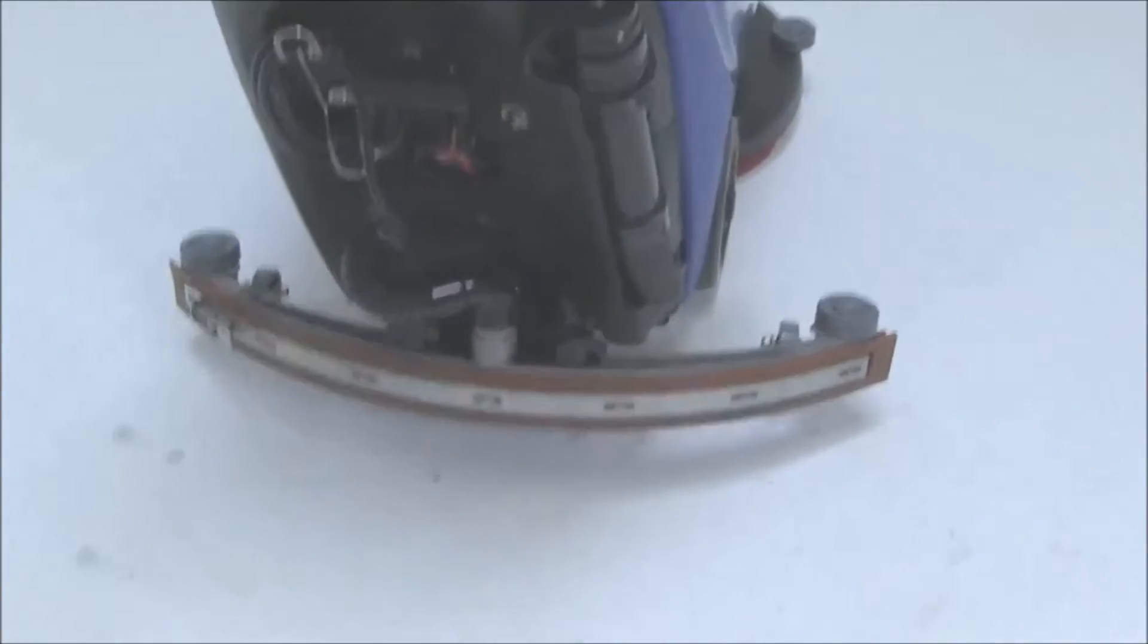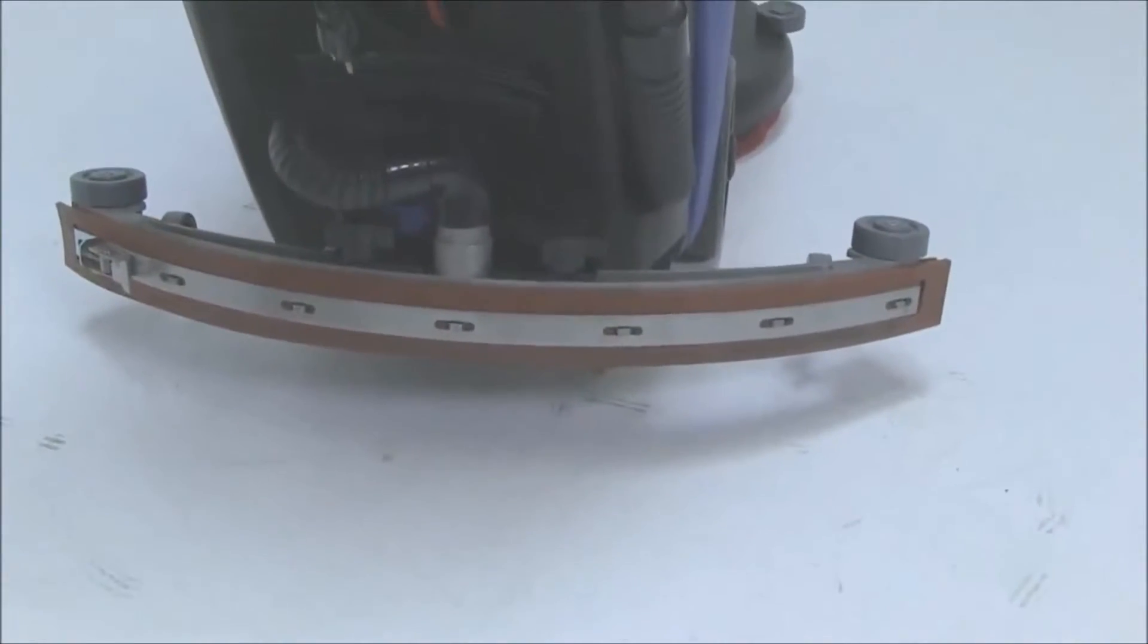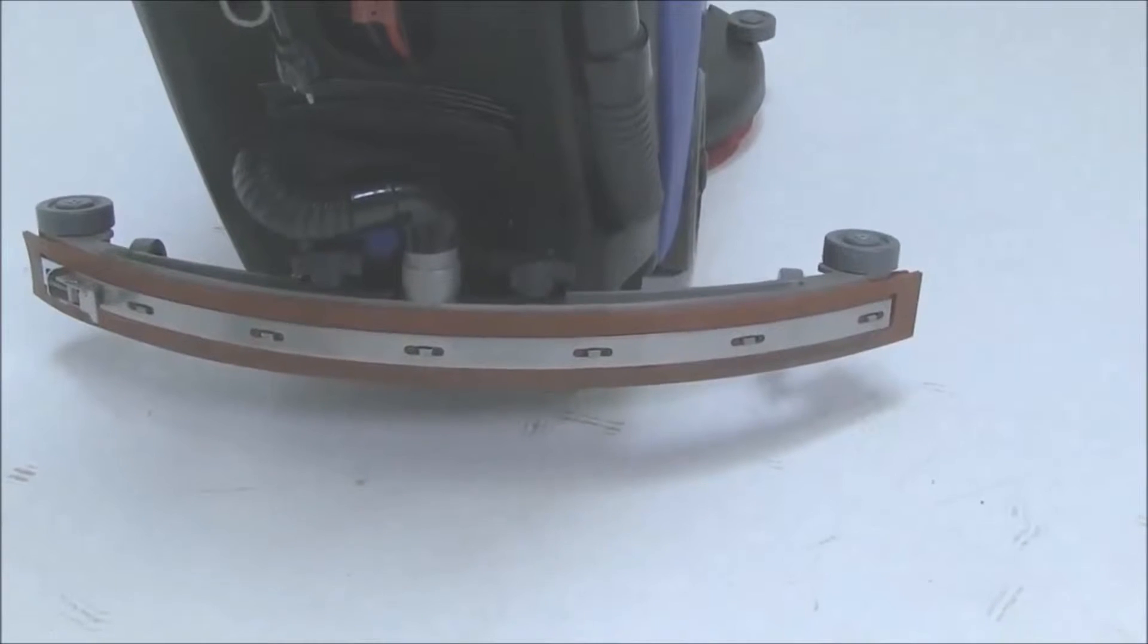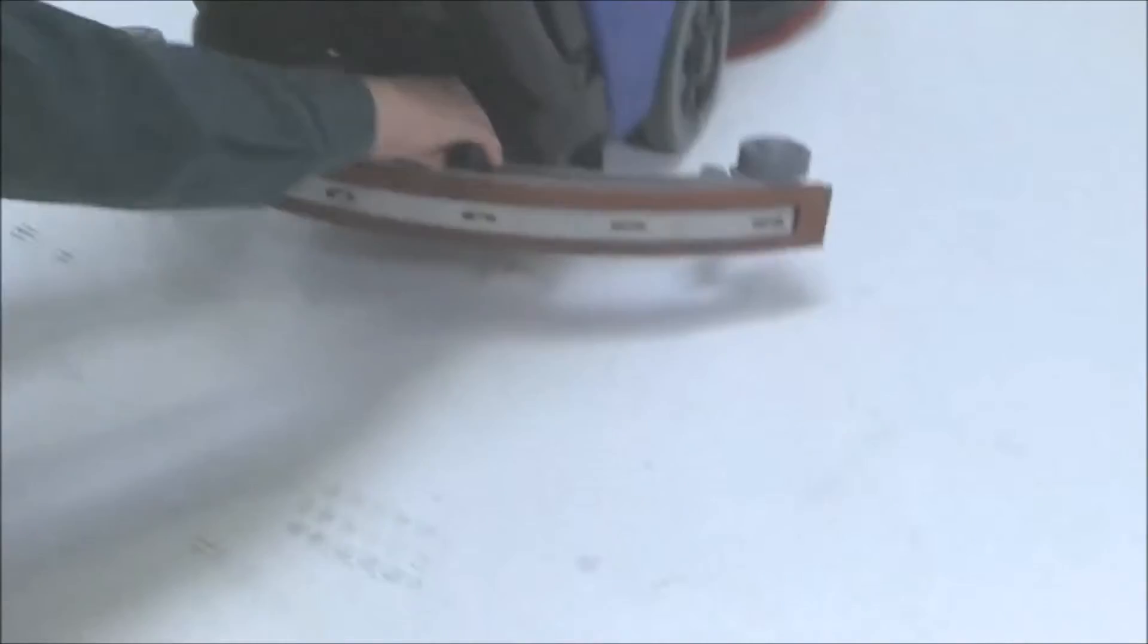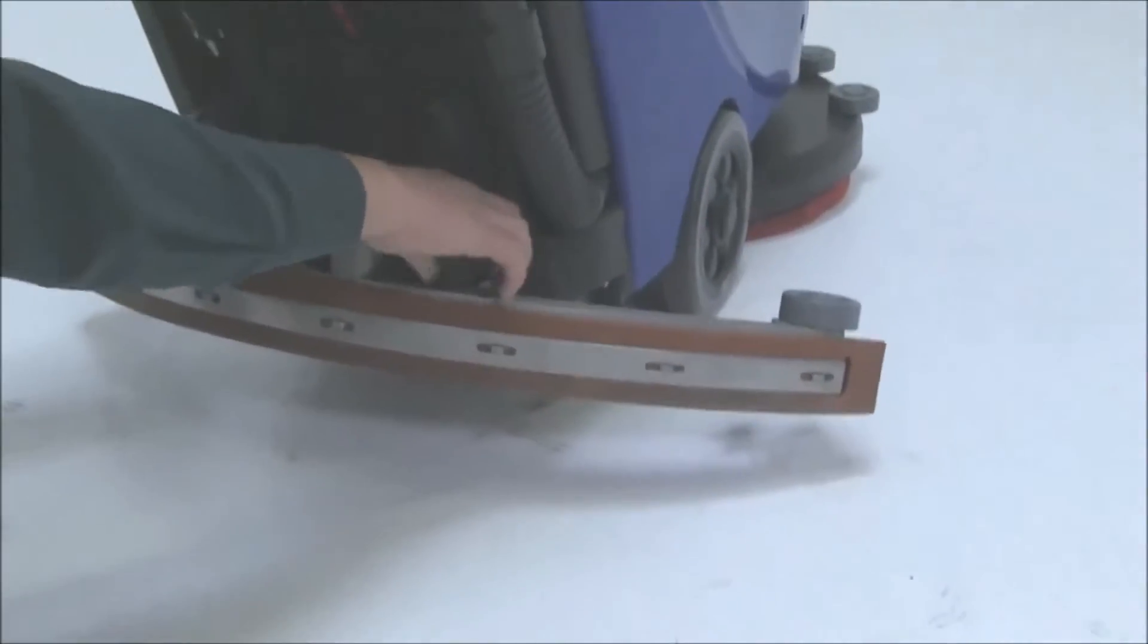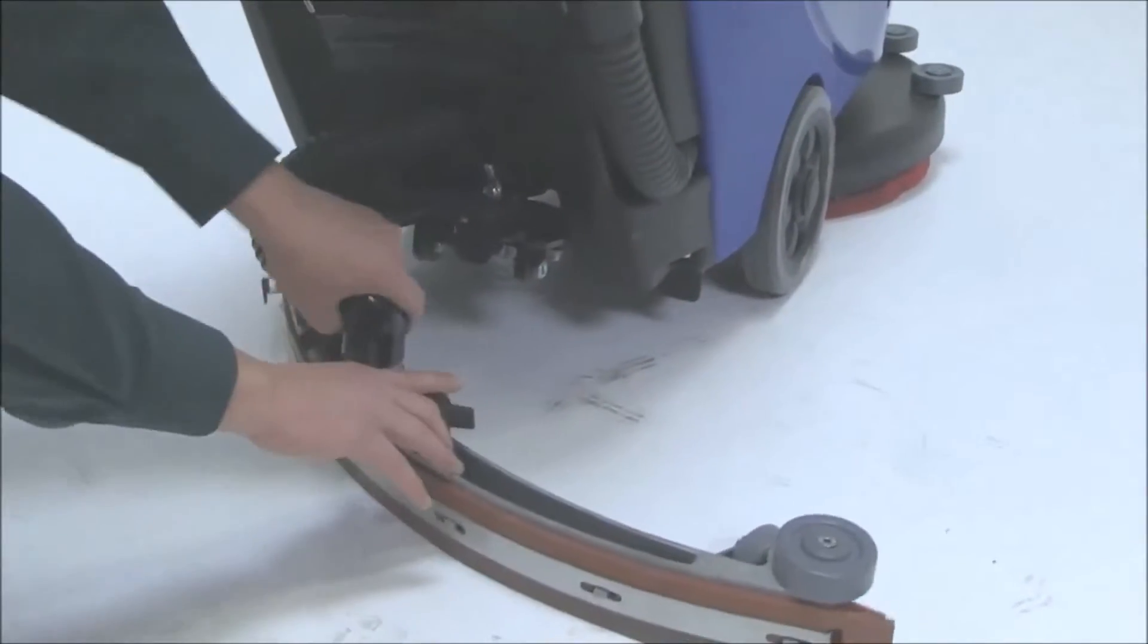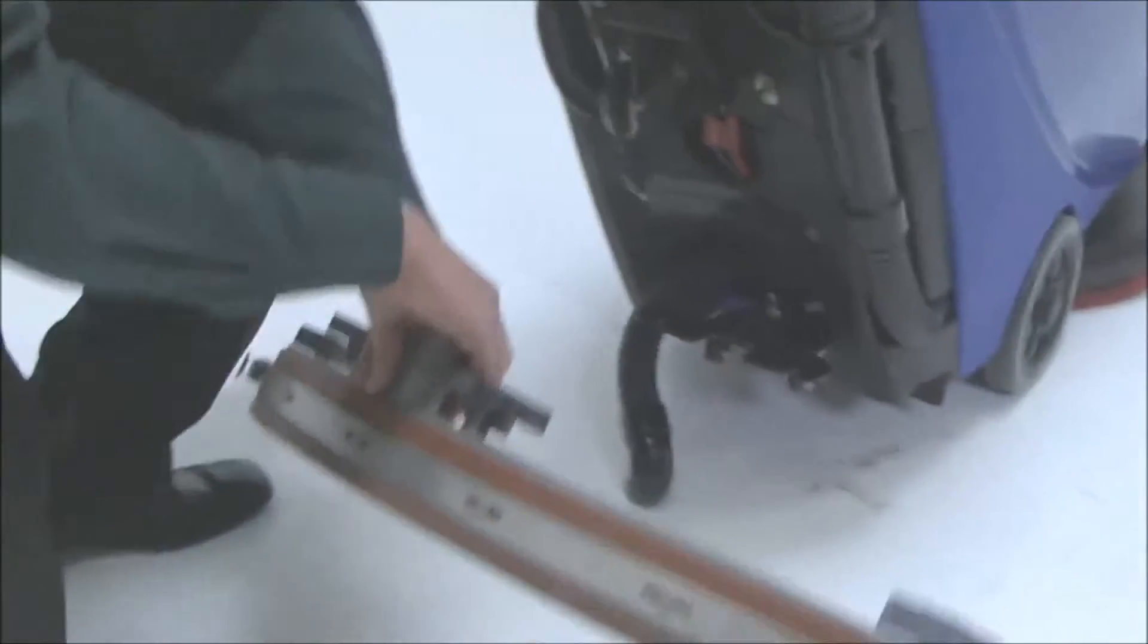The squeegee assembly is a curved design and it's a breakaway squeegee assembly, so that if it does hit an obstruction it's designed to slide off the assembly. It can be removed easily by loosening the two wing nuts and pulling off the vacuum hose.